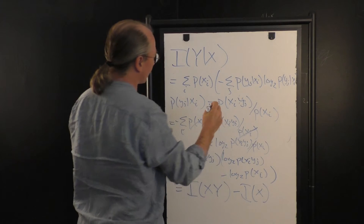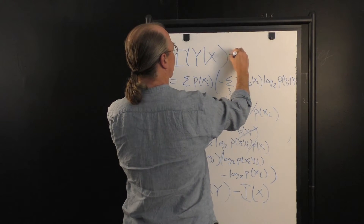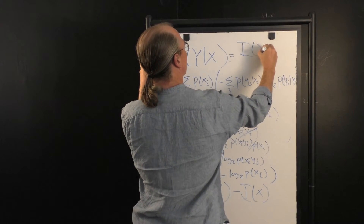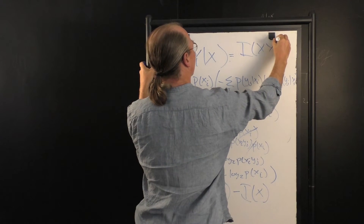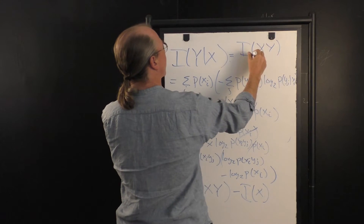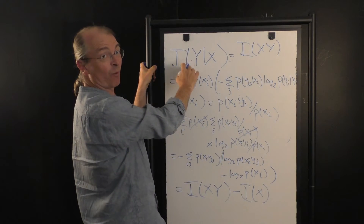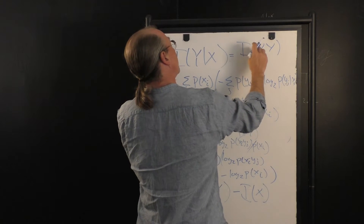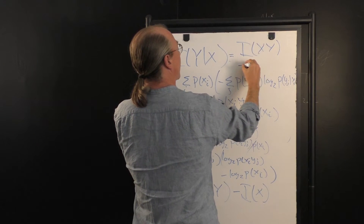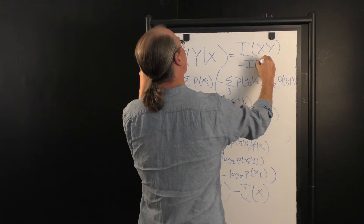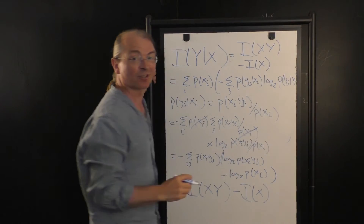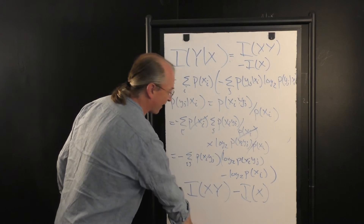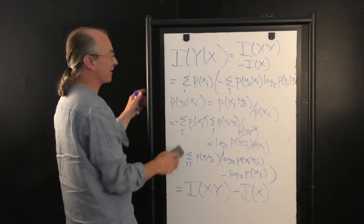So we have a really nice and simple relationship: the conditional information of Y given X is equal to the information in X and Y together, minus the information in X. A little bit of algebra, but I'm sure everybody out there can take it.